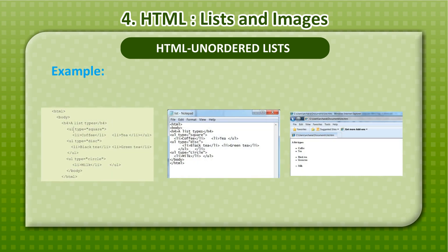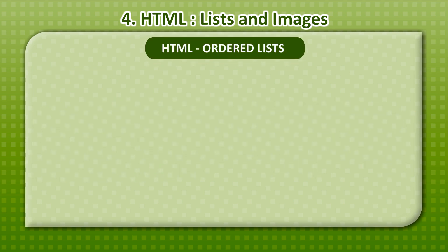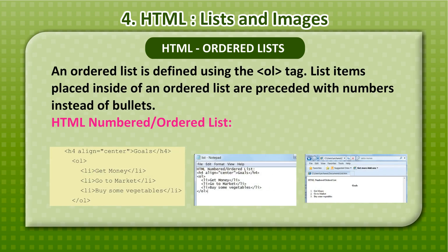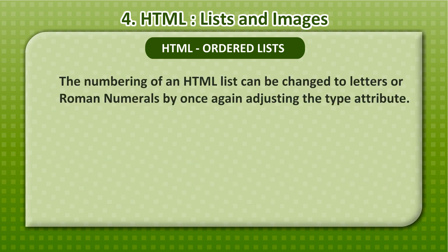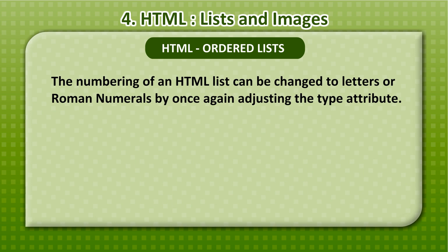HTML ordered lists: an ordered list is defined using the OL tag. List items placed inside an ordered list are preceded with numbers instead of bullets.